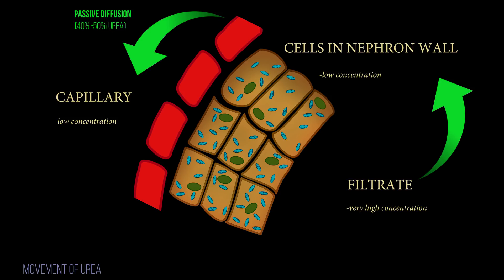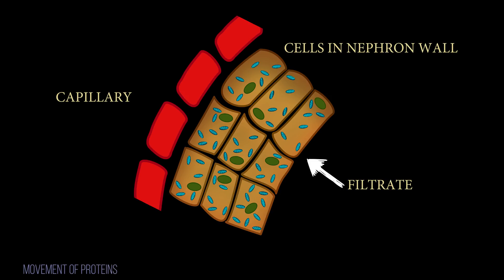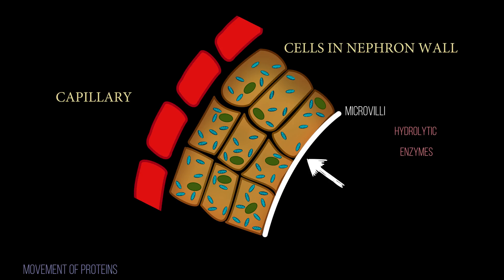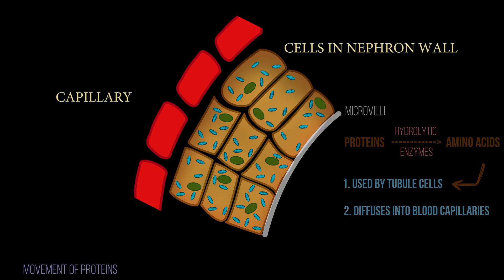Although urea is not needed, it is harmless in this smaller concentration. The remainder is excreted in the urine. Small proteins which pass into the tubule during ultrafiltration are removed at the base of the microvilli, where enzymes digest these proteins to amino acids.